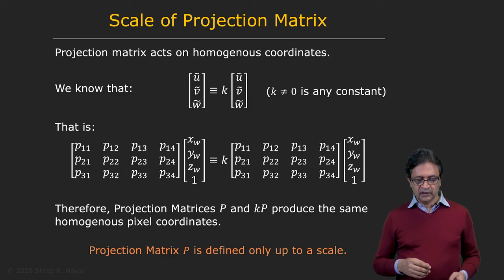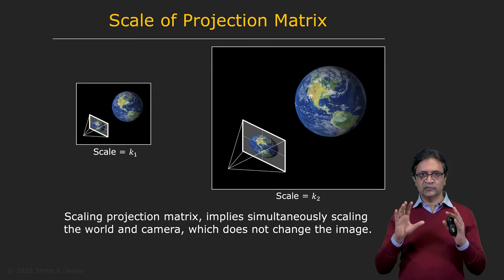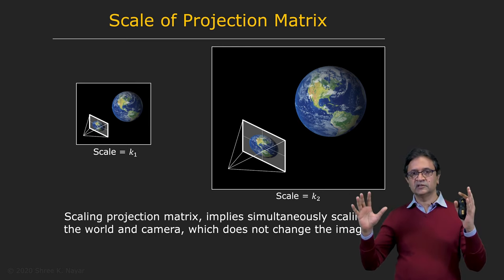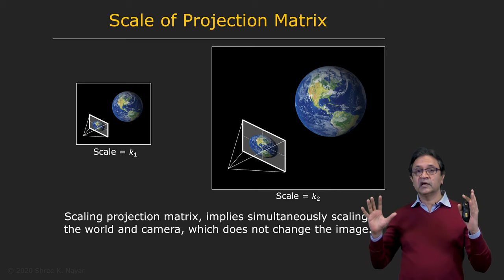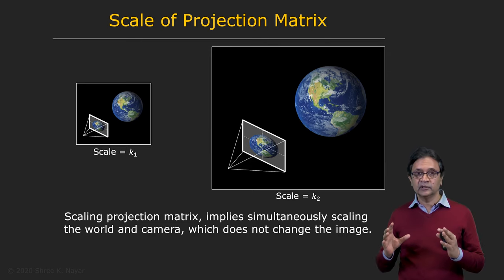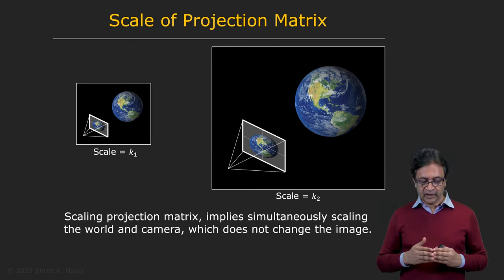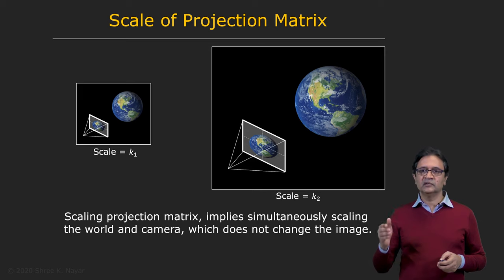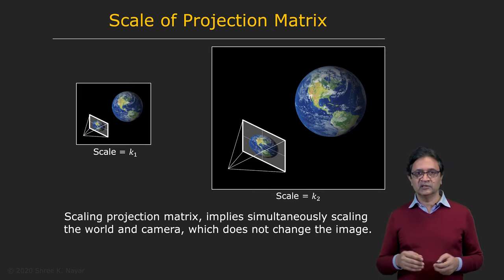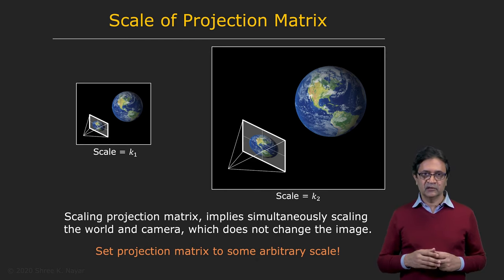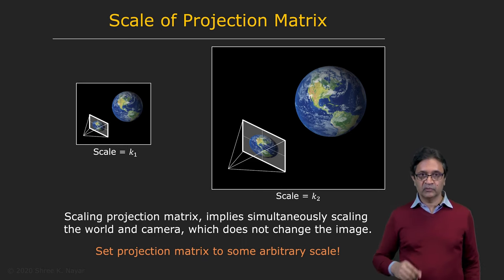So what does this really mean? This means that if you have some world and a camera and you take an image, and now let's say that you double the size of the world in terms of the dimensions of objects, but also the distances between them, and you double the size of the camera, which means the effective focal length, the pixel size and everything, and you take another image, these two images are going to be identical to one another. That means scaling the projection matrix implies simultaneously scaling the world and the camera, which does not change the image, which goes to say that we can set the scale of the projection matrix arbitrarily. You can choose any scale you wish for the K that we were just talking about.